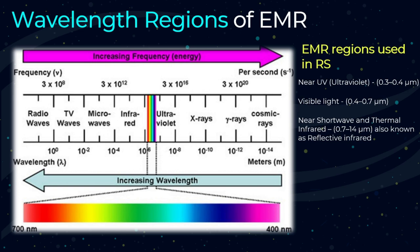In other words, the shorter the wavelength is, the more electromagnetic radiation is characterized as particle motion with more linearity and directivity. The electromagnetic radiation regions used in remote sensing are near UV (ultraviolet), visible light, near shortwave and thermal infrared, and microwave. The spectral range of near infrared and shortwave infrared is sometimes called reflective infrared because that range is more influenced by solar reflection rather than emission from the ground surface.